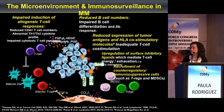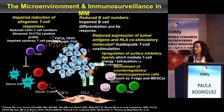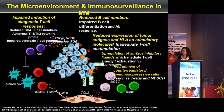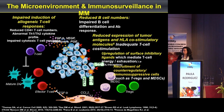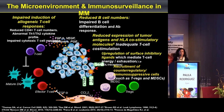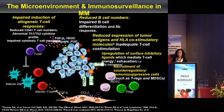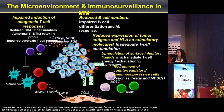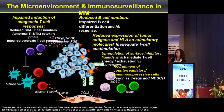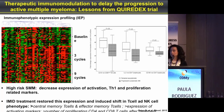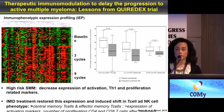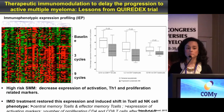There is also reduced expression of HLA co-stimulatory molecules, leading to inadequate T cell co-stimulation. Furthermore, multiple myeloma cells express higher levels of inhibitory ligands such as PD-L1 that mediate T cell anergy and exhaustion. Stromal cells and bone marrow environmental cells produce chemokines that promote the invasion of immunosuppressive cell populations like myeloid-derived suppressor cells and T-regulatory cells.